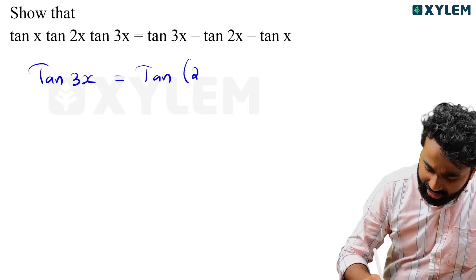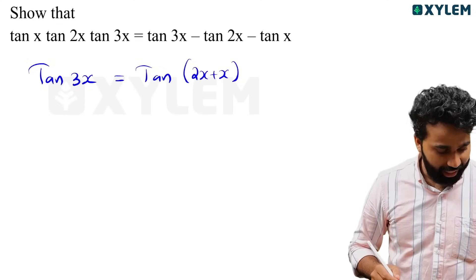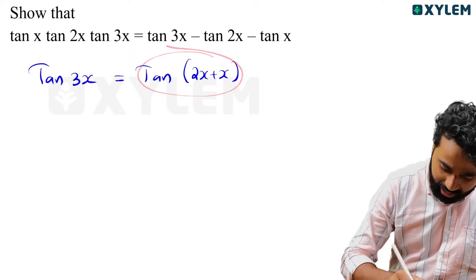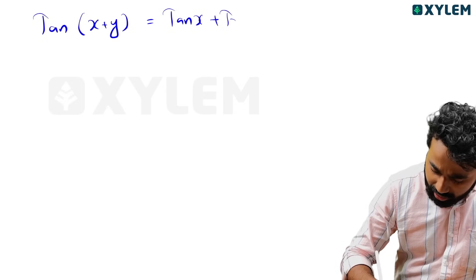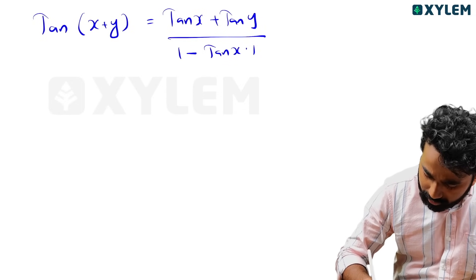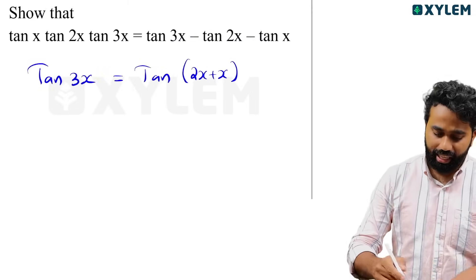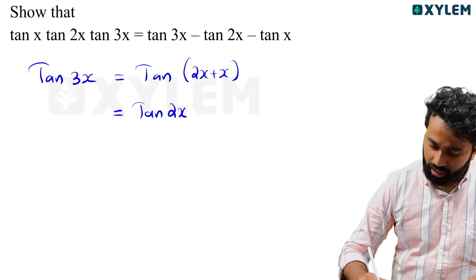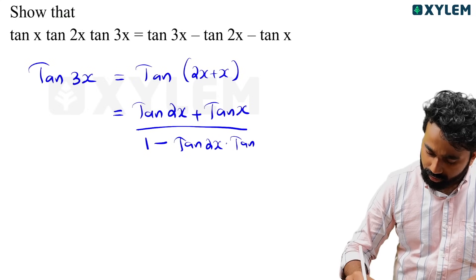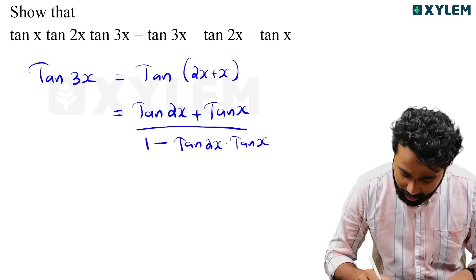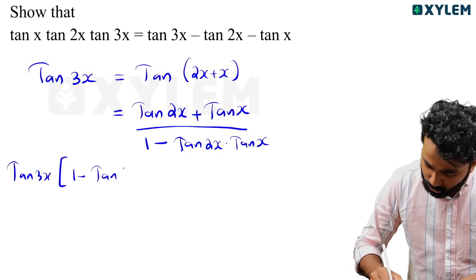Tan 3x equals tan of 2x plus x. Using the formula: tan of x plus y equals tan x minus tan y divided by 1 minus tan x into tan y. So tan of x plus y equals tan x plus tan y divided by 1 minus tan x into tan y. We apply this to get tan 3x into 1 minus tan 2x into tan x.